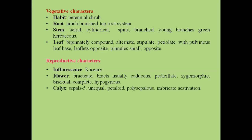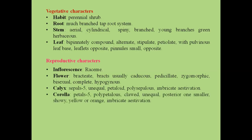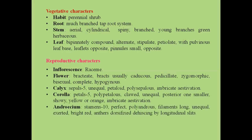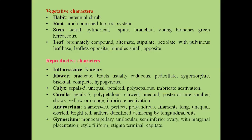Calyx consists of 5 sepals; they are unequal, petaloid, polysepalous with imbricate aestivation. Corolla with 5 petals, polypetalous condition, all the petals are clawed, unequal; the posterior one is smaller; petals are showy with imbricate aestivation. Androecium consists of 10 stamens which are perfect, polyandrous; filaments long, unequal, exserted, bright red colored; anthers dorsifixed, dehiscing by longitudinal slit. Gynoecium consists of a monocarpellary, unilocular, semi-inferior ovary with marginal placentation; style filiform; stigma terminal, capitate.